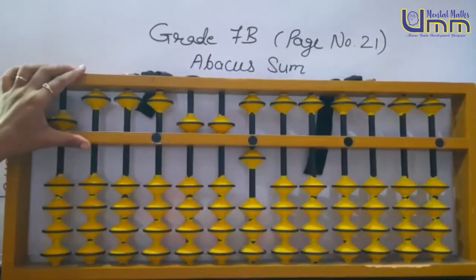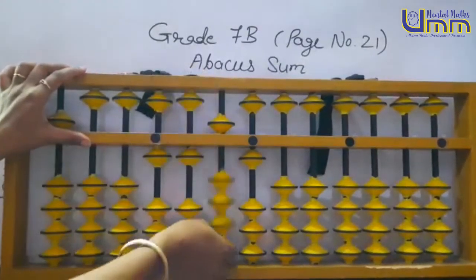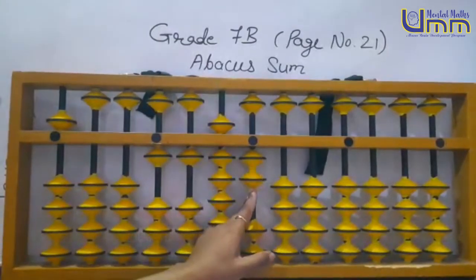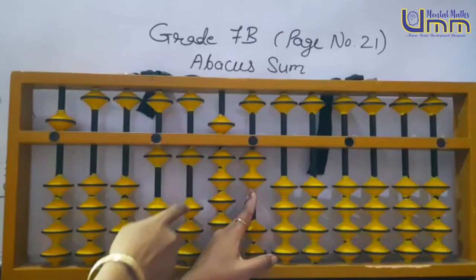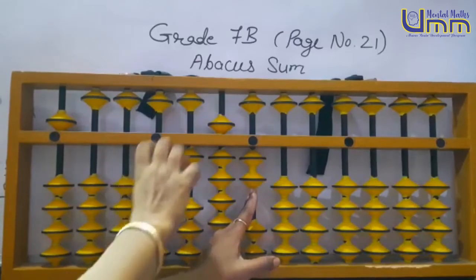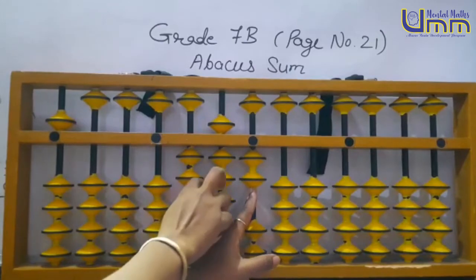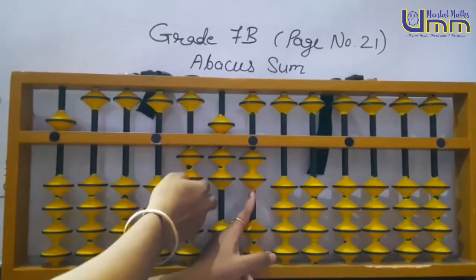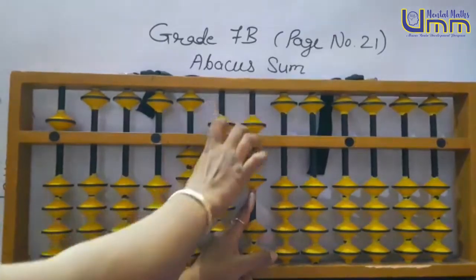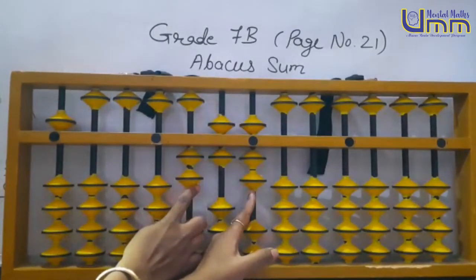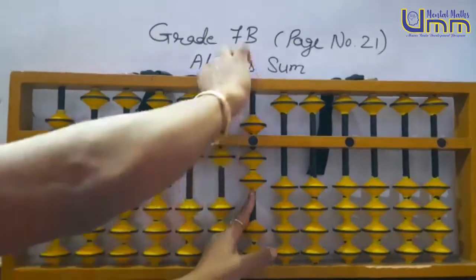641: 6 plus 1 minus 5 plus 10, 4, 1. Minus 9: can you do minus 9 directly? No. So minus 10 plus 1. Then 2 directly, 5. Minus 5: minus 10 plus 5. 50: minus 5 plus 10.